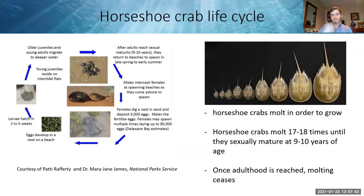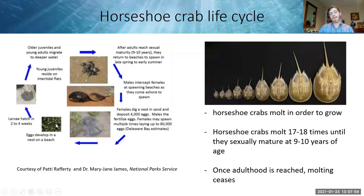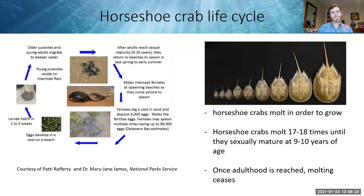Horseshoe crabs belong to the order Xiphosura, meaning 'swordtails.' They have a complex life cycle — eggs are laid on beaches by spawning adults typically every spring, though in Florida they mate twice a year in fall and spring. Usually one female is surrounded by one or more males, spawning from April to June. Females can lay up to 80,000 to 100,000 eggs each year, with intense spawning aggregations of hundreds to thousands of crabs.